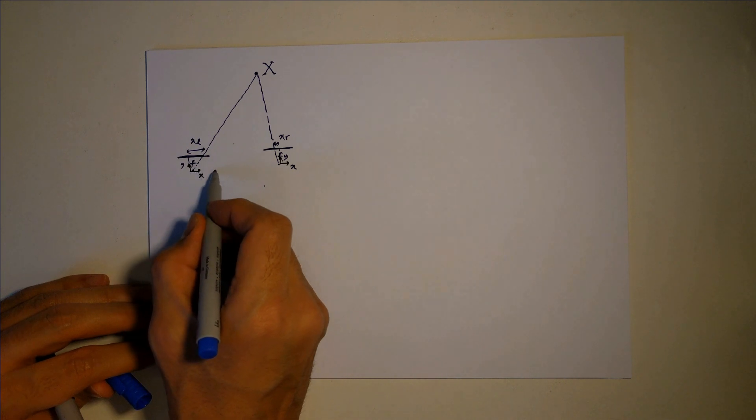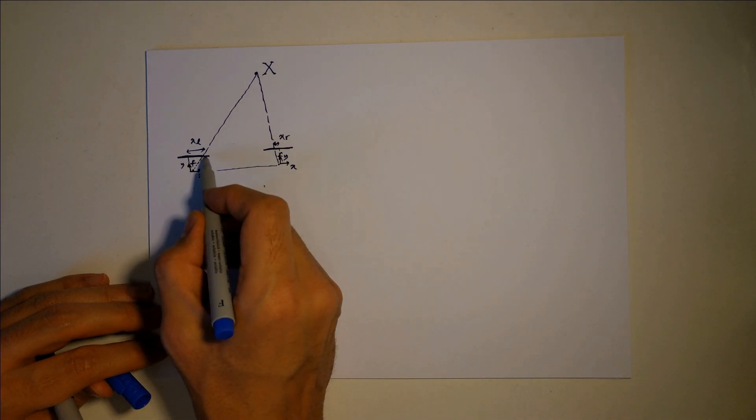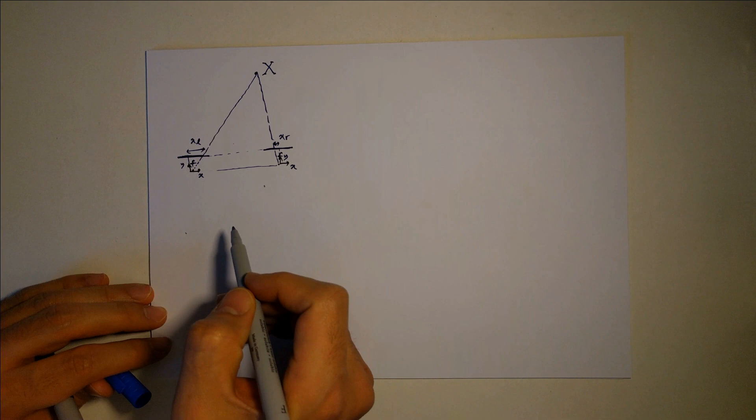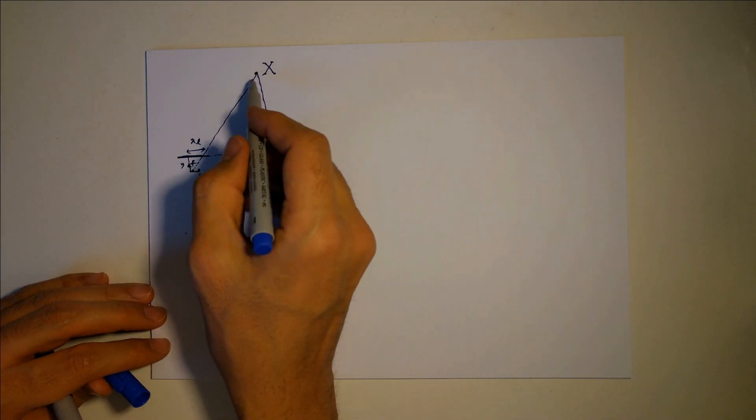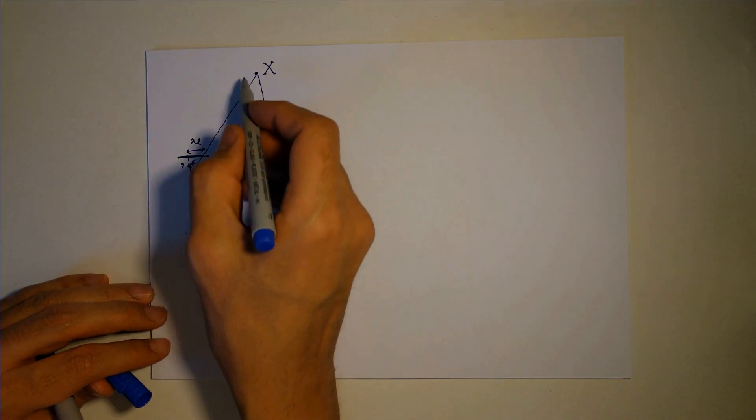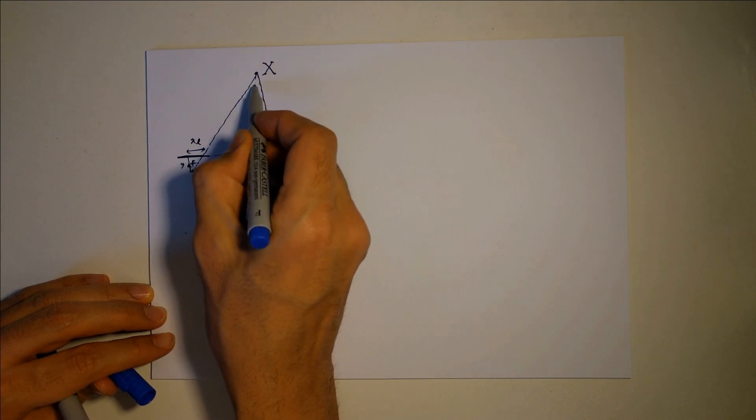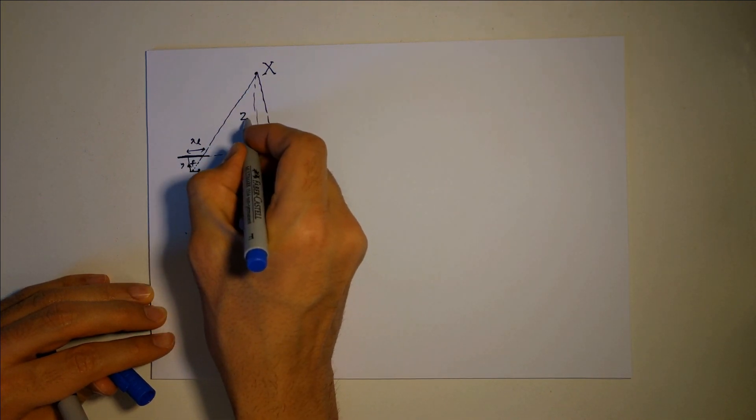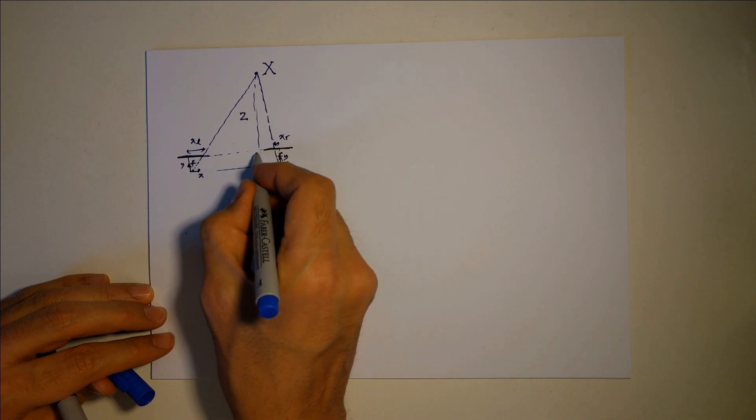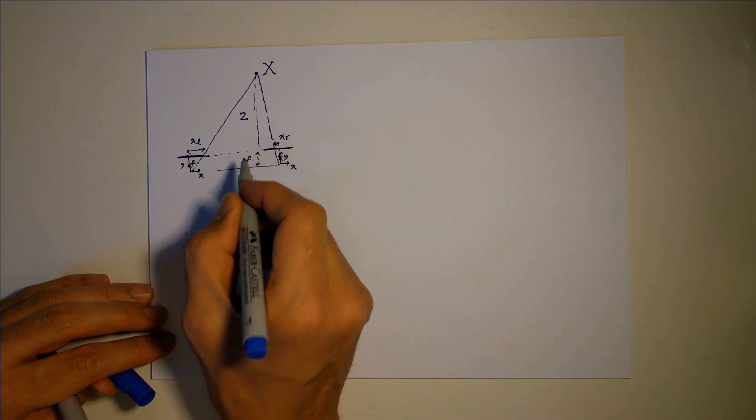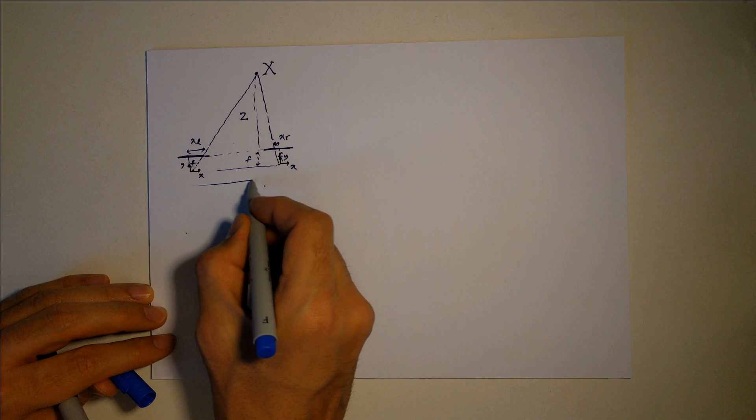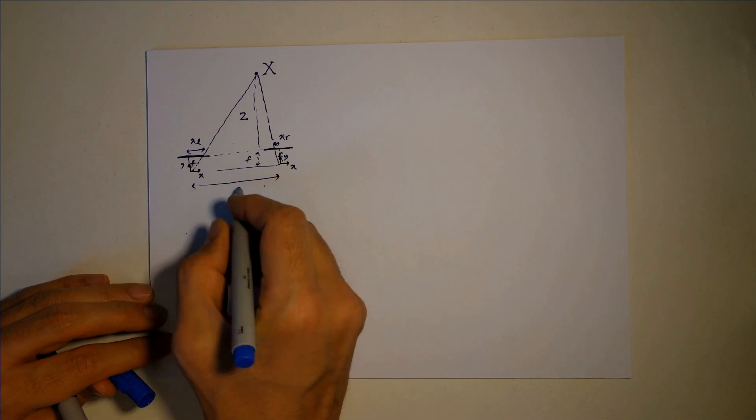If I write the equation between these two triangles, basically what I'm looking for is Z is distance between cameras, so this is Z, and this is F, and the distance between these two is X.